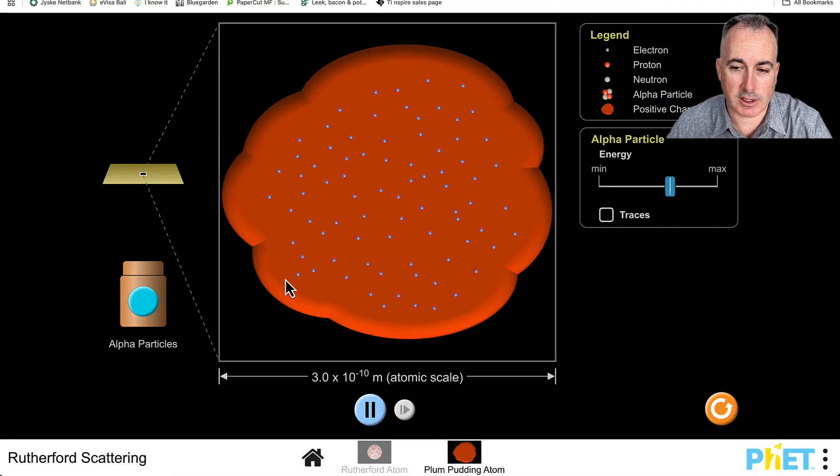If I go to PhET—I love them—they've got their Rutherford scattering simulation, and I chose plum pudding. This is the model. When I press go, I'm going to be firing these alpha particles at this very thin gold foil.